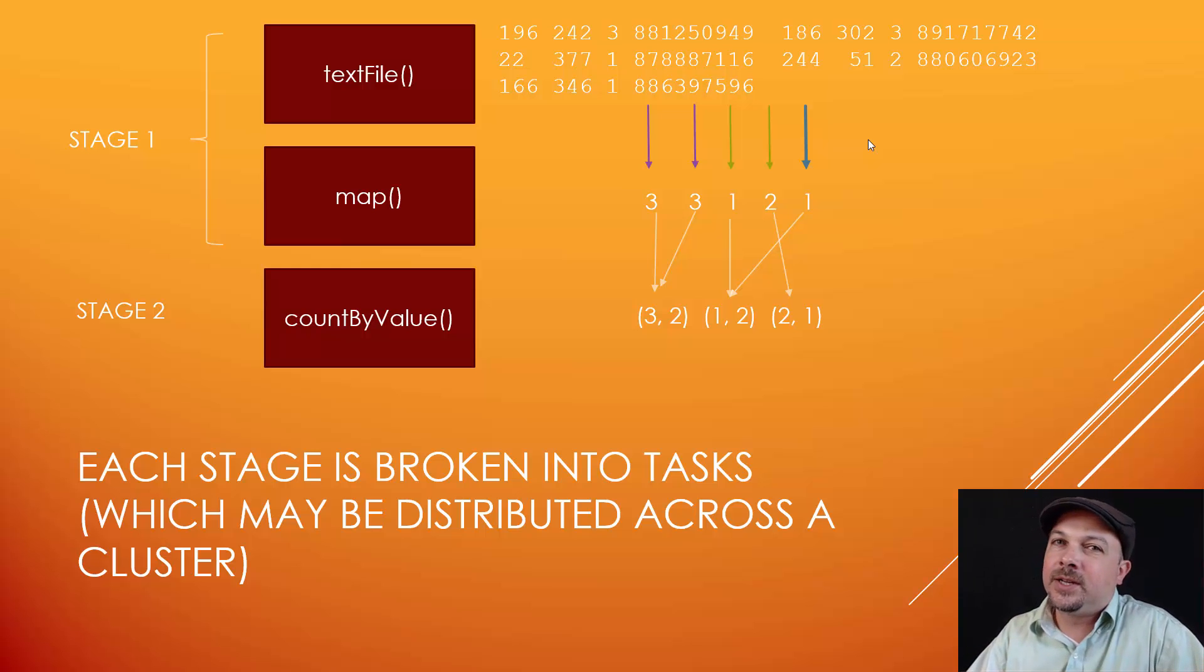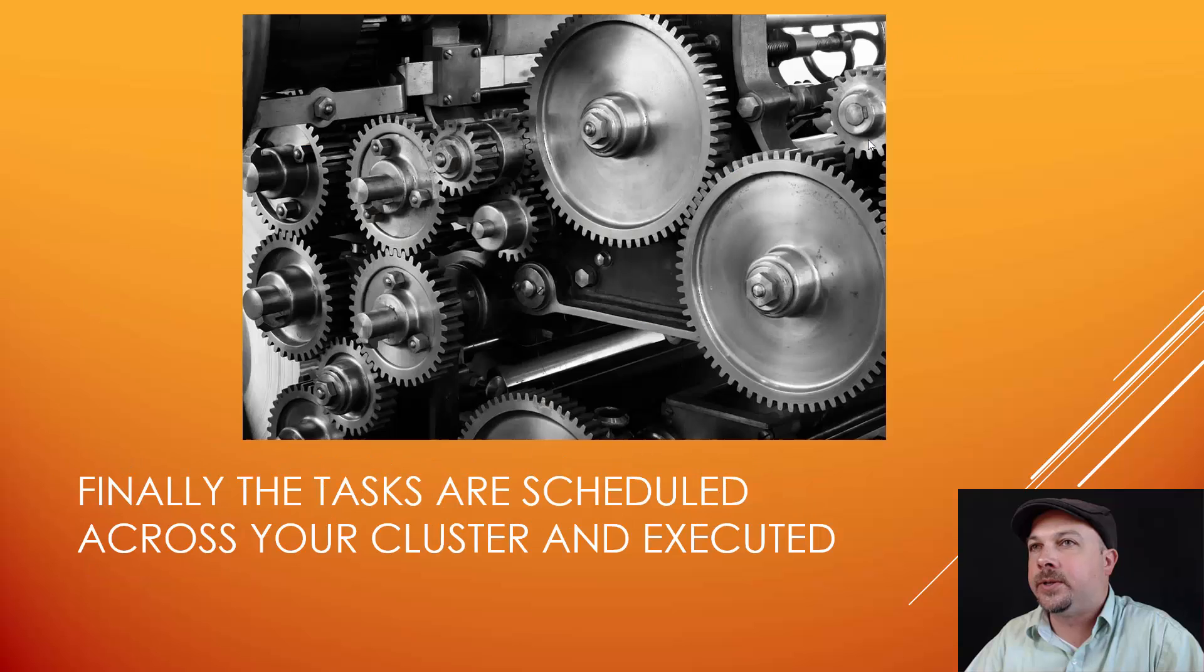So we start with an execution plan. The execution plan is broken into stages based on things that can be processed together in parallel that don't have a shuffle involved. And then stages get broken up into tasks that are distributed to individual nodes on your cluster. That's all there is to it.